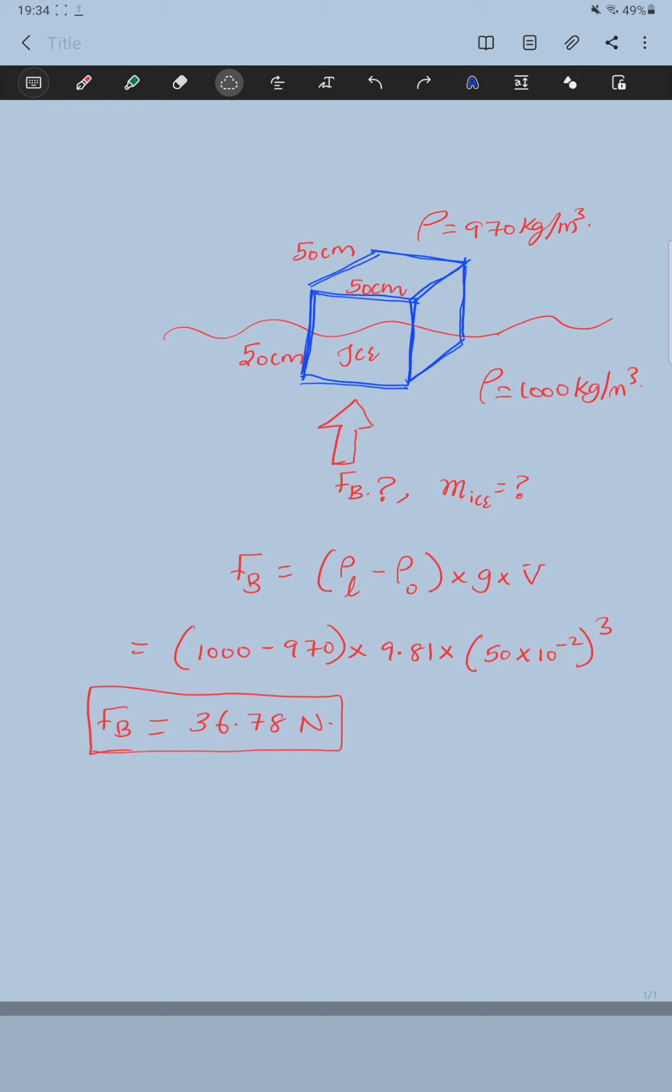So we know already that the ice is going to float. The reason is the density of the object here, the ice, was less than the density of the water, 1000. So we knew it is going to float.